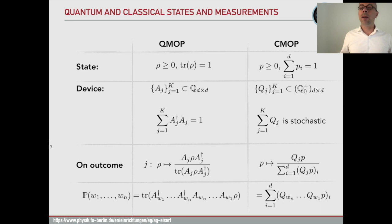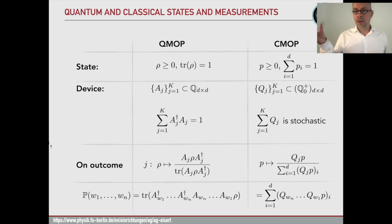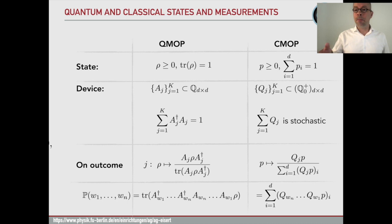The Kraus operators satisfy the normalization condition: sum of A_j† A_j equals the identity, meaning something always comes out in a measurement. A specific outcome is obtained by conjugating the density operator with the corresponding Kraus operator and normalizing — that is the state just after measurement. The classical analog is on the right-hand side. A specific path — a word of outcomes w1 to wn — is described by taking the trace of all these A†'s and A's with the quantum state, with the analogous classical expression on the right.